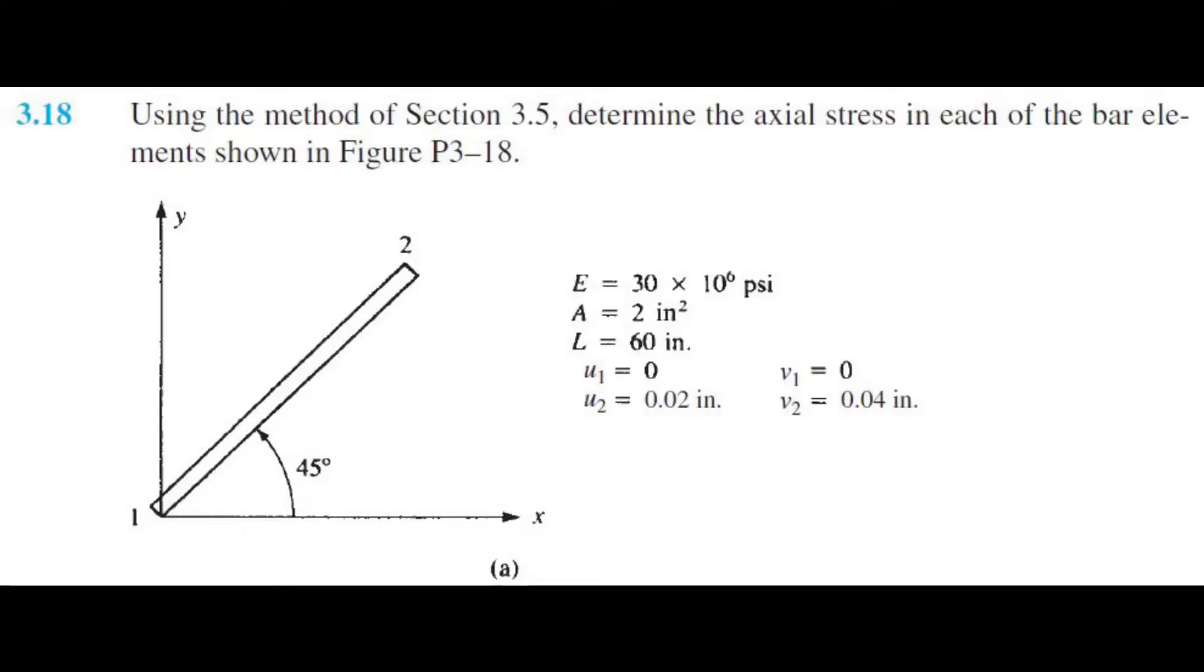Alright, so what's going on y'all? Now we have to determine the axial stress in each of the bar elements shown. In this case, we're just doing part A for now. They give us E, A, and L, and they also give us the displacement vector U1, V1, U2, and V2. So let's go.